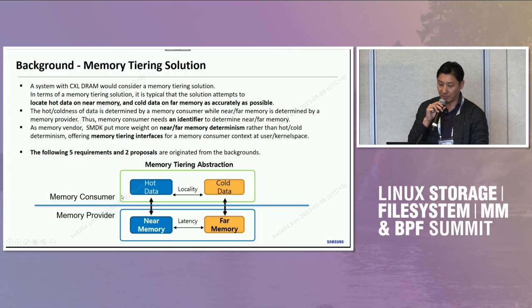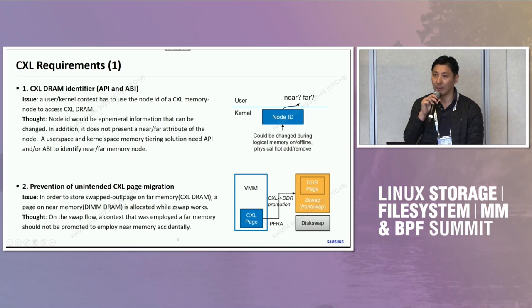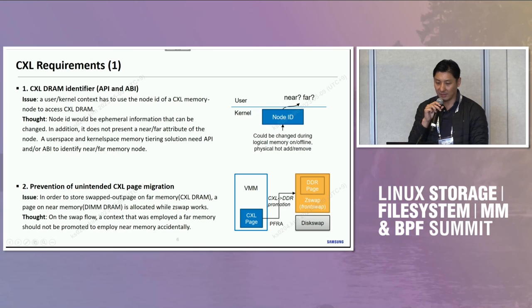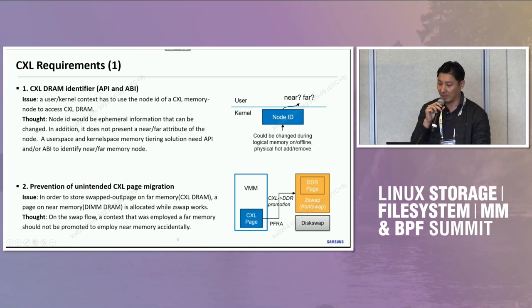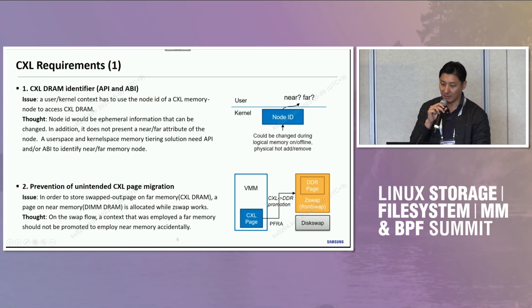The following five requirements and two proposals originate from these backgrounds. Please let me know if you have questions during my presentation. The first requirement is about a CXL DRAM identifier — it could be an API or ABI. The issue is that a user or current context must use a node ID of a CXL memory node to access the CXL DRAM. However, node ID is not stable information because it can change during logical memory online/offline or physical hot-add/removal operations. Also, the node ID does not represent the near-far memory attribute of the node, so user space and kernel space memory solutions need an API or ABI to identify near-far memory nodes.